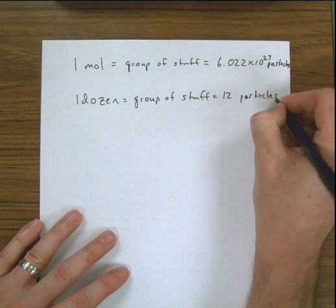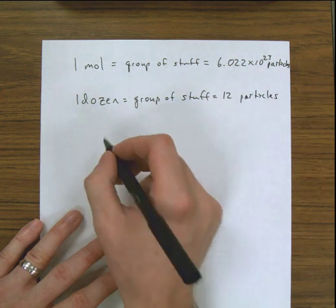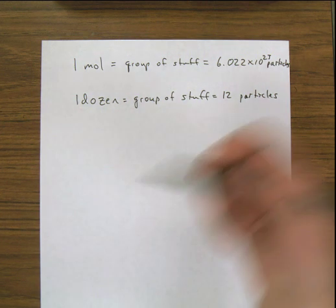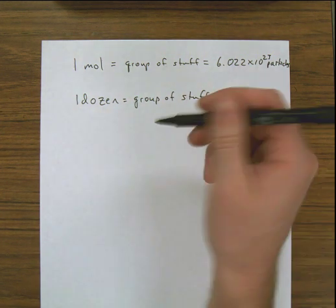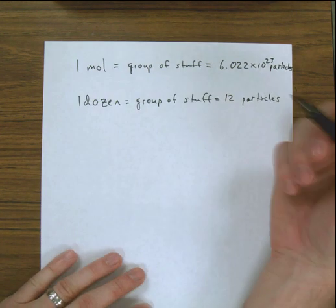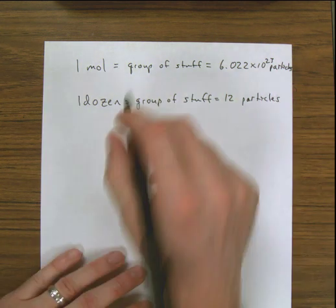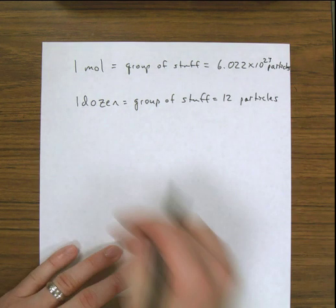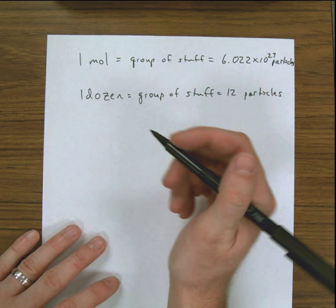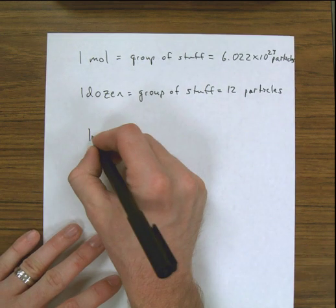I can use the dozen to count bicycles, donuts, and eggs. And I can use the mole in the same way — I can use the mole to count eggs, donuts, and bicycles. Now, what we're going to do is talk about the concept of what happens when I have one mole of one thing.